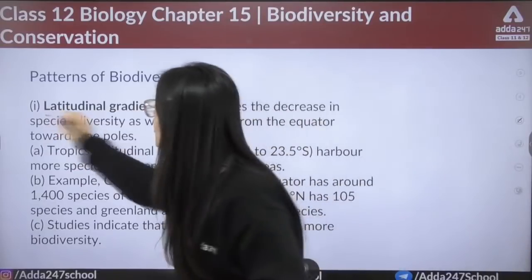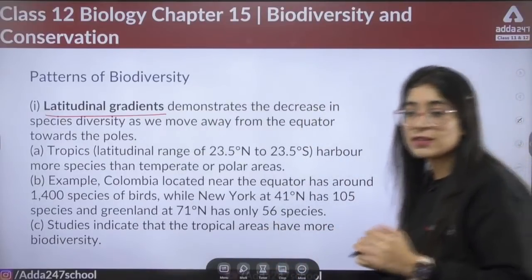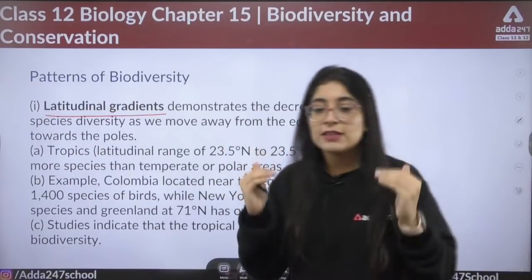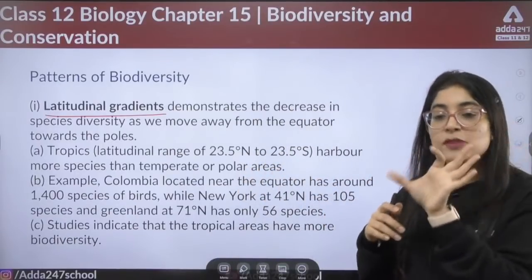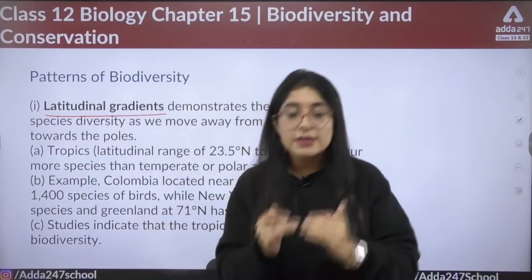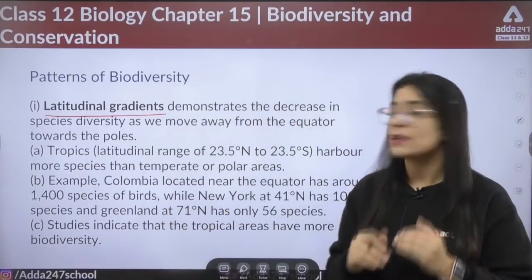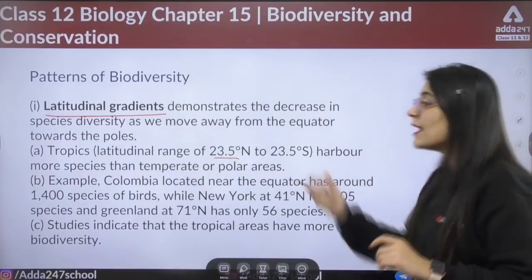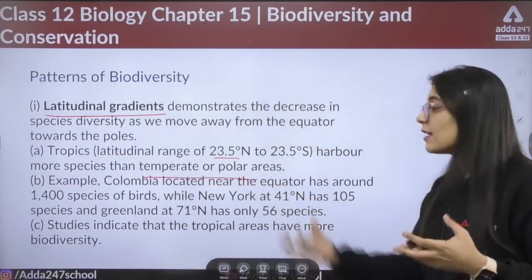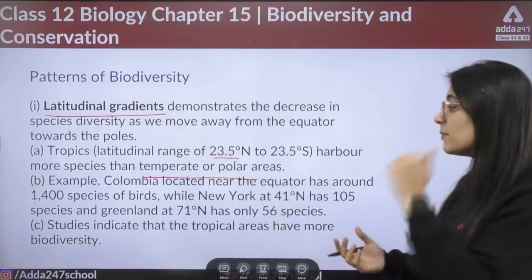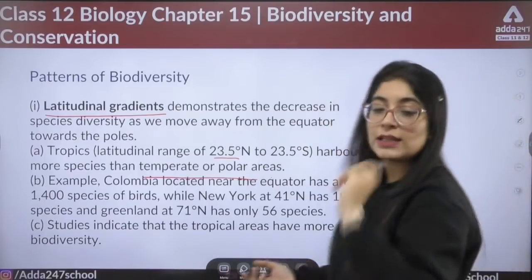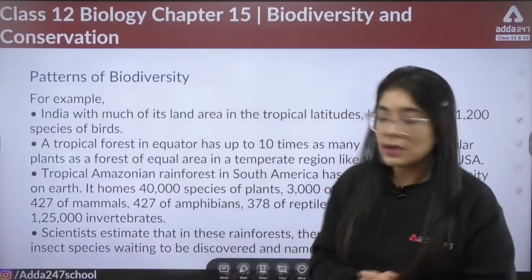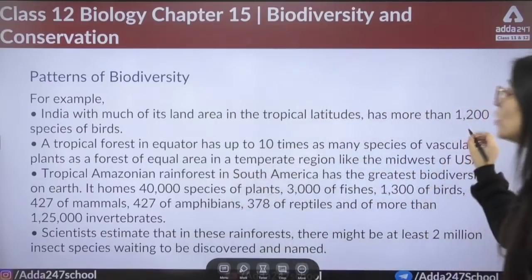Patterns of biodiversity: first is latitudinal gradient, which demonstrates a decrease in species diversity as we move away from the equator. The tropical temperature remains constant throughout the year, while temperate regions are more prone to seasonal variations. Tropics, spanning 23.5 degrees north to 23.5 degrees south, have more species. Colombia near the equator has around 1,400 bird species, New York has 105, and Greenland has only 56.